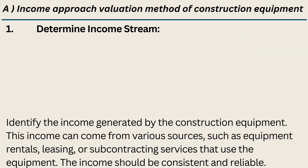Step 1: Determine Income Stream. Identify the income generated by the construction equipment. This income can come from various sources such as equipment rentals, leasing, or subcontracting services that use the equipment. The income should be consistent and reliable.